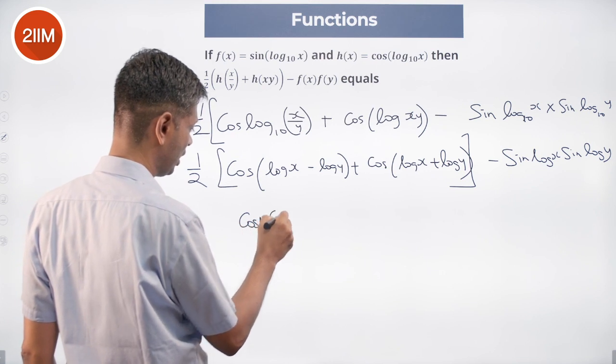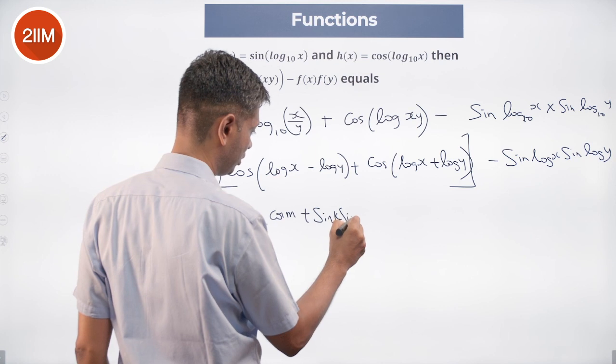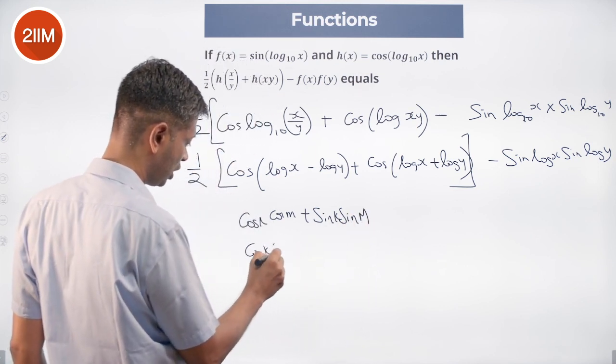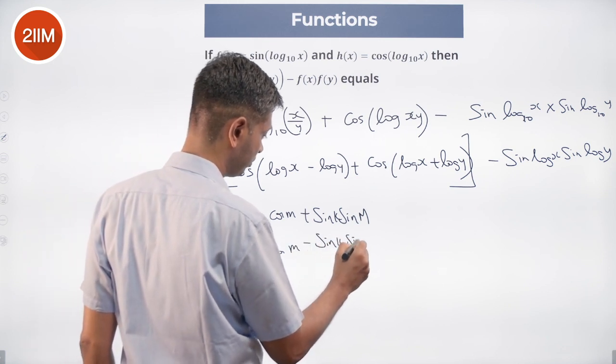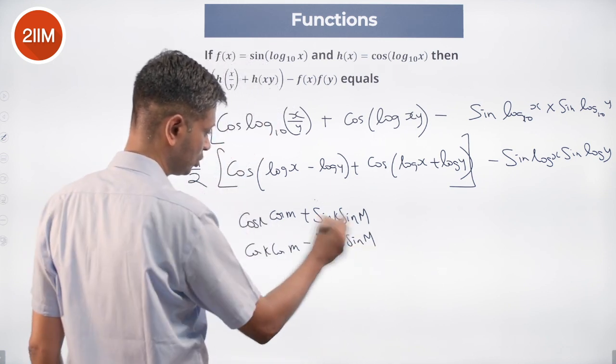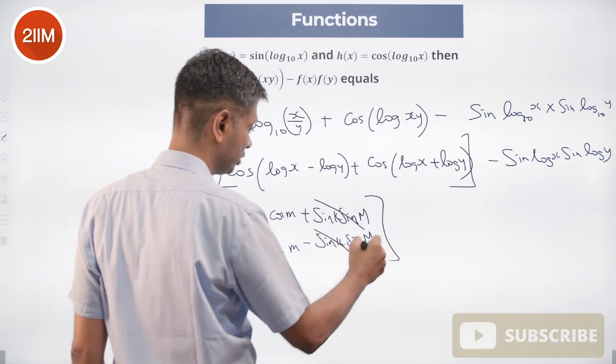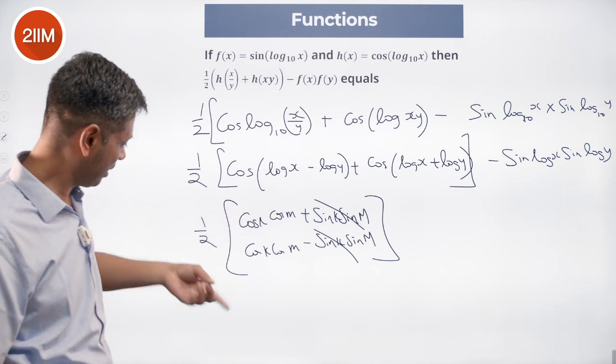So cos K cos M plus sin K sin M, plus cos K cos M minus sin K sin M. This will go away and have half into this, which is effectively 2 cos K cos M times 1/2.